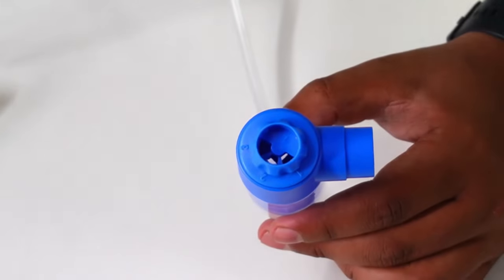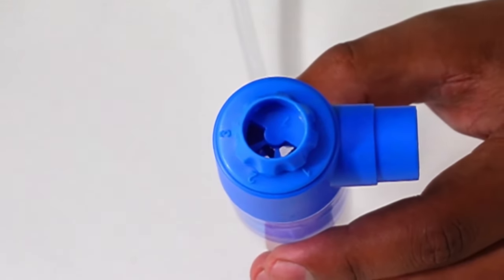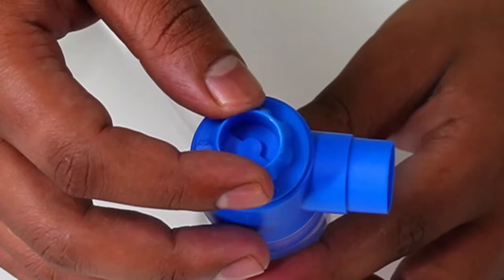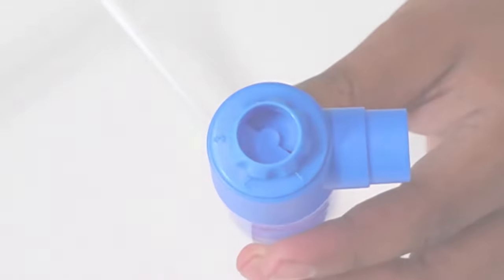You can check the intensity of the vapors by observing the white smoke-like vapors emanating from the nozzle. To adjust the intensity of the vapors, turn the knob on the cap between three modes.